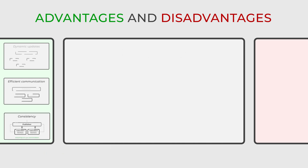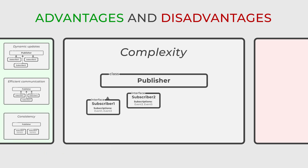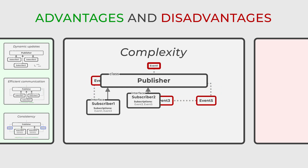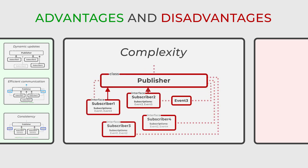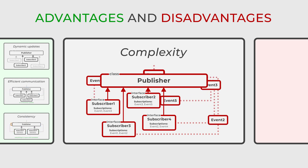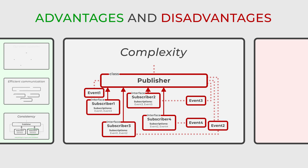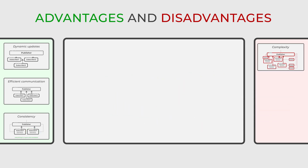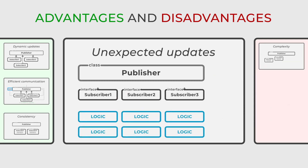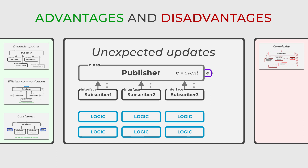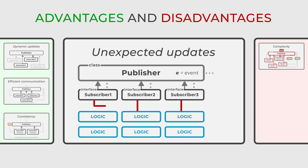However, there are also disadvantages to consider. Implementing the Observer pattern can introduce additional complexity to a system, particularly when there are many observers to manage and their interactions become intricate. This complexity can make the system harder to understand and maintain. Furthermore, if observers are used excessively or the subject's state changes frequently, it can lead to unexpected updates and cascading changes throughout the system. This can make the behavior of the system unpredictable and challenging to debug.